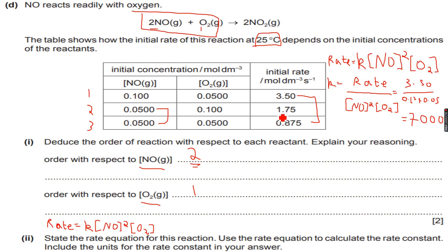Now if you do the same for experiment 2, let's do it. So it will be 1.75 divided by 0.05 square into 0.1 and again we get 7,000 and we will get 7,000 for experiment 3 as well. So we know that the value of k is 7,000.